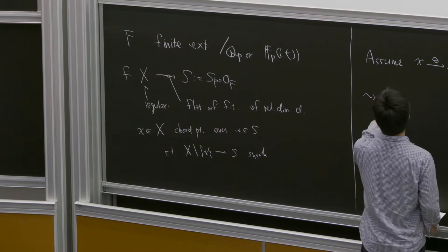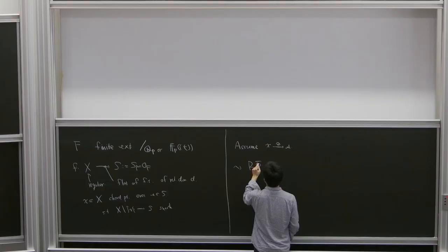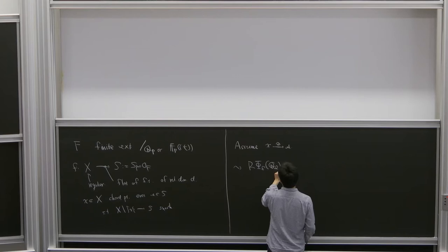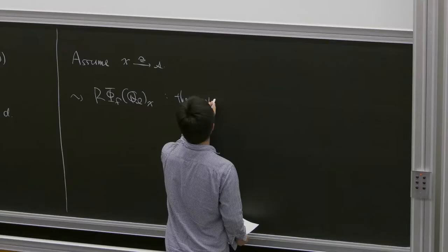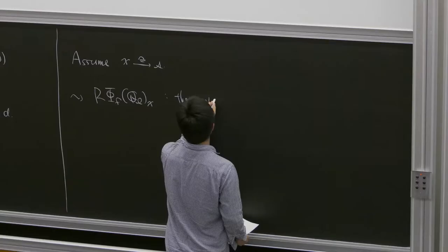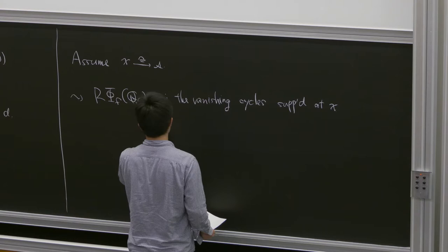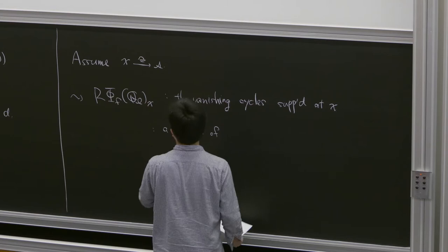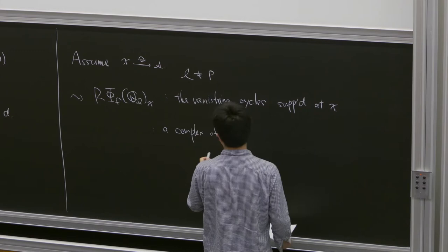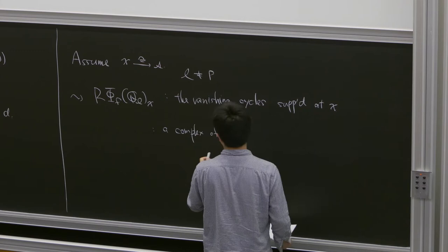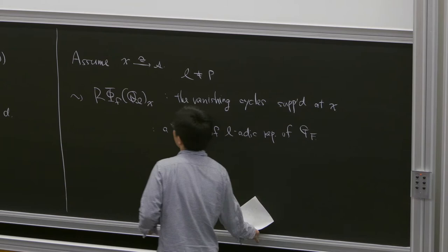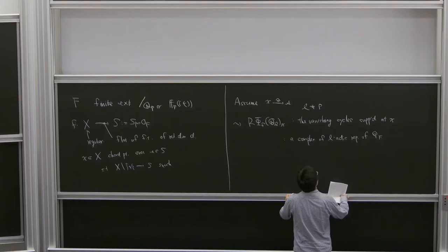Then we have, under this assumption, we have a vanishing cycle complex supported at point x. And this is a complex of l-adic representation of the absolute Galois group.